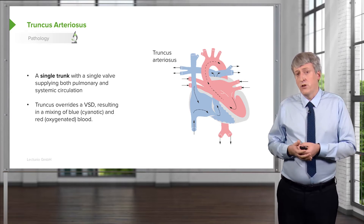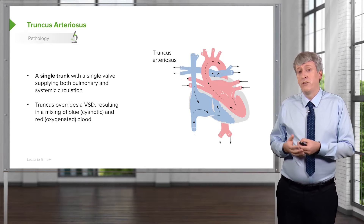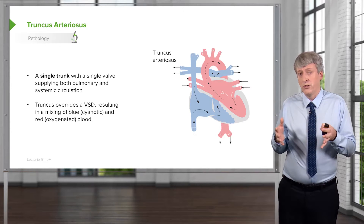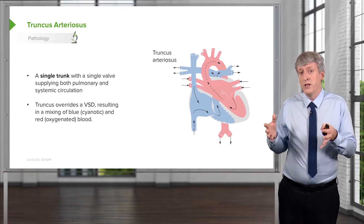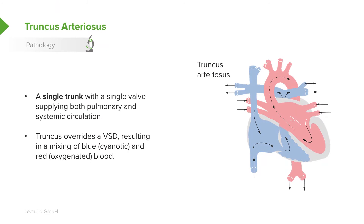These patients are managed surgically — we have to repair the situation to recreate a functional heart. The single trunk with a single valve overrides both circulations, the VSD allows for blood mixture, and this results in the baby being cyanotic.